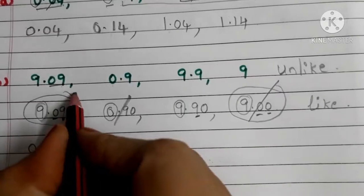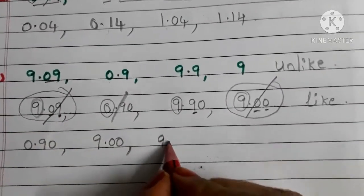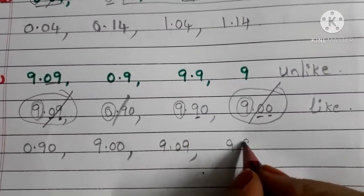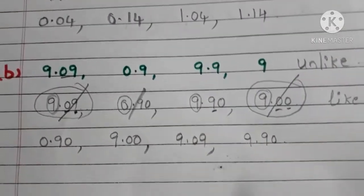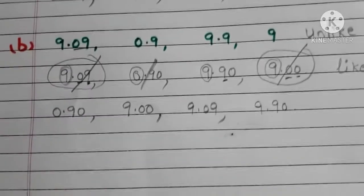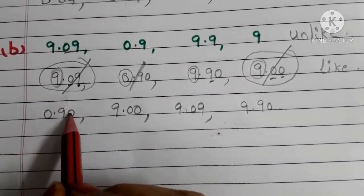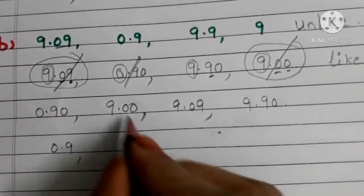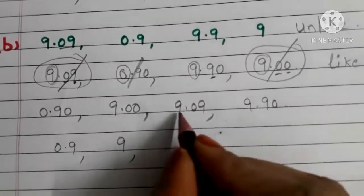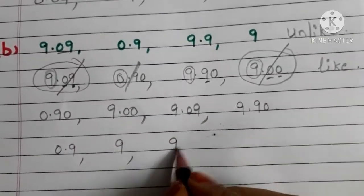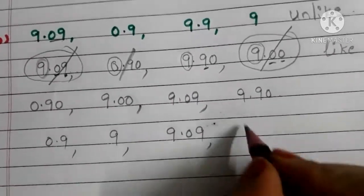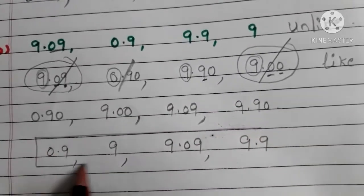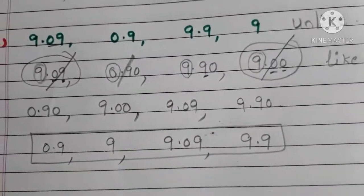The next smaller number is 9.09, and finally we have 9.90. Write the answer according to the question: 0.90 means 0.9, 9.00 means 9, 9.09 stays 9.09, and 9.90 means 9.9. So this is the ascending order for the given decimals.